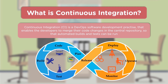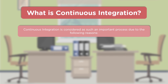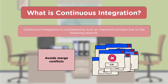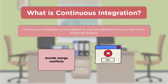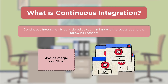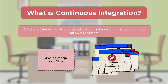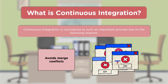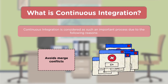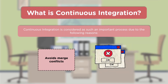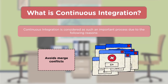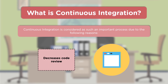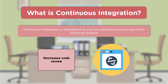Continuous integration is considered a very important process for several reasons. First, it avoids merge conflicts: by frequently syncing source code from developer machines to the shared repository, different developers can collaborate into a single shared repository, always working on the latest source code and eliminating merge conflict scenarios.